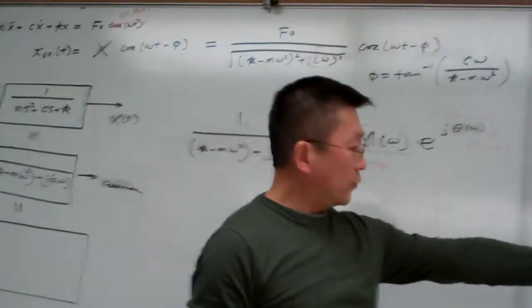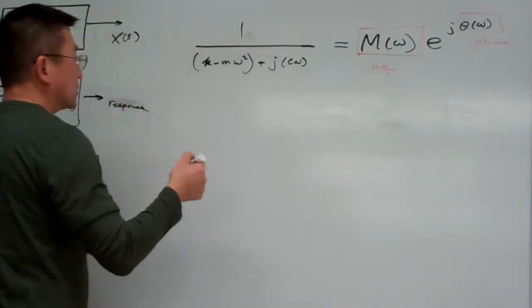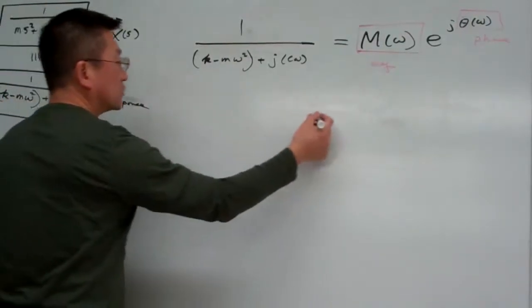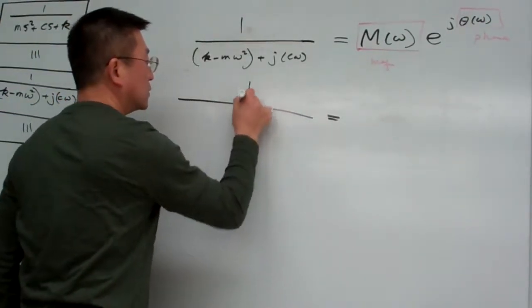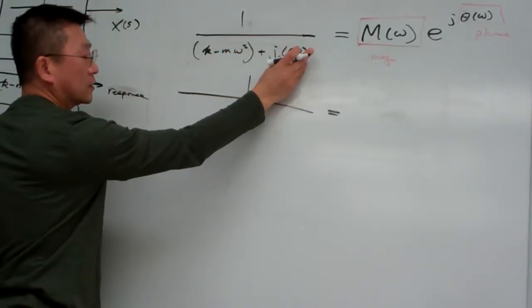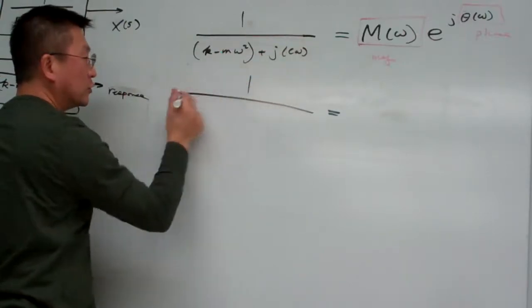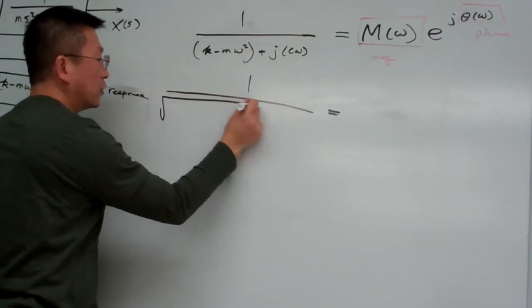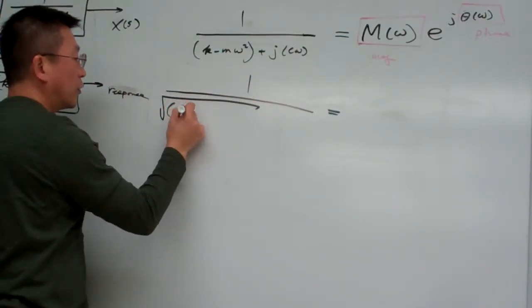Let me do the calculation here. So this one in numerators we have the real part, we have the imaginary part, so the magnitude simply is equal to square root of the real part squared plus the imaginary part squared.